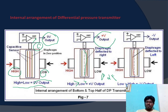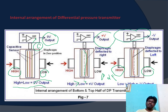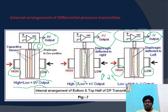In the third condition, the operation is the opposite. The diaphragm moves towards the left-hand side because the low pressure terminal is having higher pressure than the high pressure terminal. The distance between the two capacitor plates changes, which changes the capacitance, and this capacitance output goes to the signal conditioning circuit. The resulting output is a negative voltage, clearly indicating that the low pressure end is having higher pressure than the high pressure terminal.